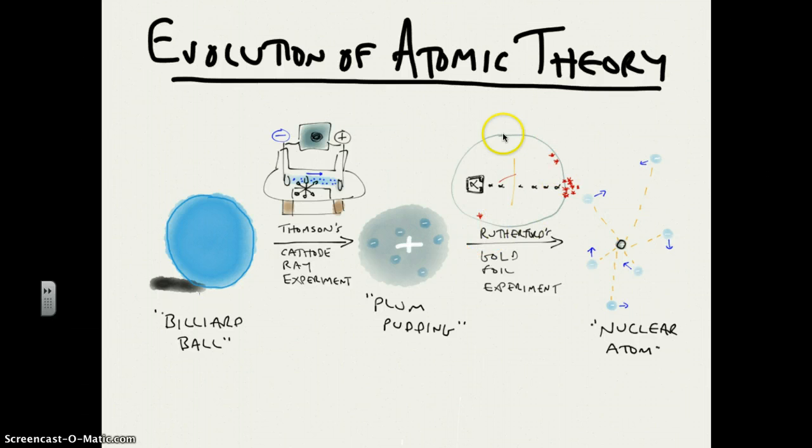Rutherford's experiment with the gold foil and the fluorescent screen and the alpha particles showed that this didn't really work. You had to revise it again, adding the very dense positive charge in the nucleus and most of the mass, mostly empty space surrounding, and these electrons flying around in that empty space being held there by the positive charge of the nucleus.